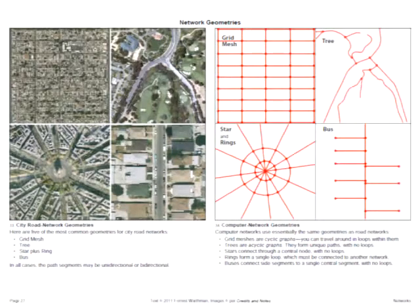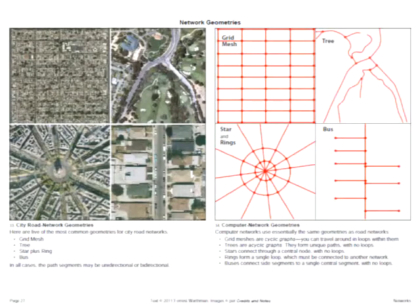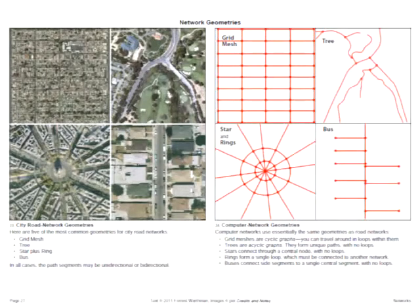Network geometries are shared by cities and computer systems. The grid mesh is commonly used in dense downtown areas — it is a cyclic graph with large numbers of loops, so you can go around the same city block over and over again. Next to that is a tree structure, an acyclic graph where there's only one possible route from point A to point B and no loops. Below that is a bus structure visible in a suburban photograph. Occasionally you will find a star or ring network, with an example from Paris.